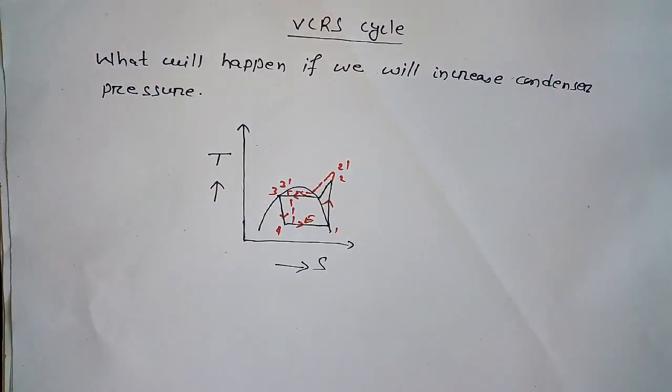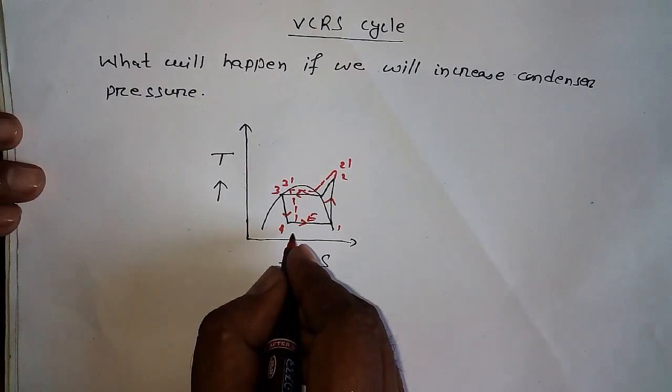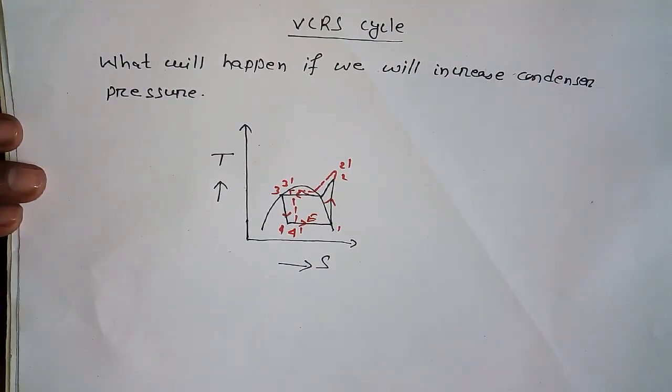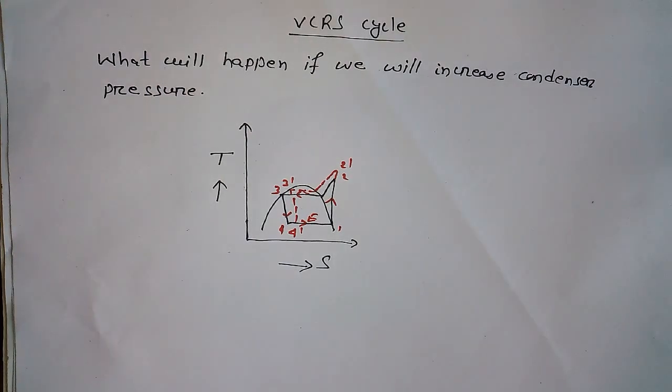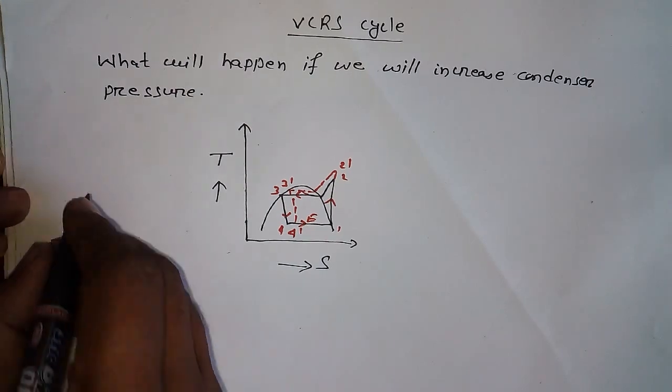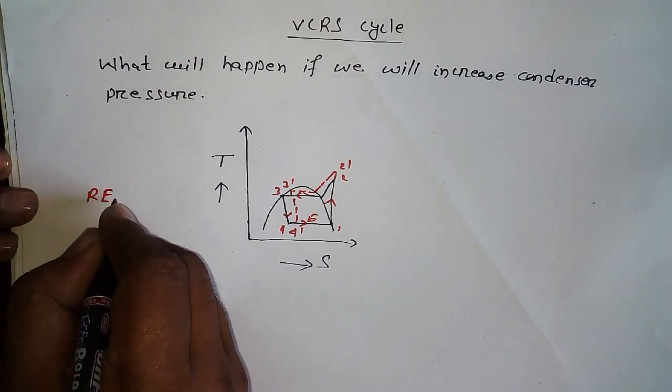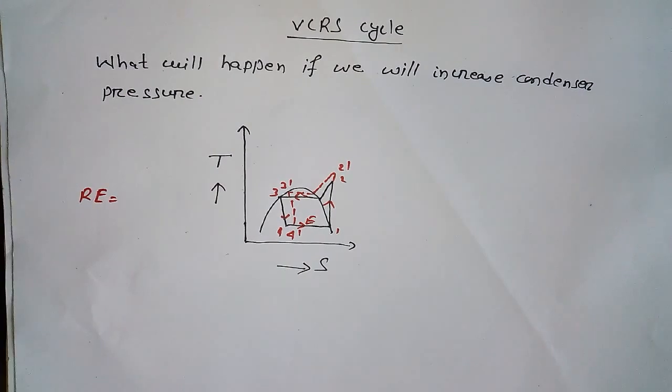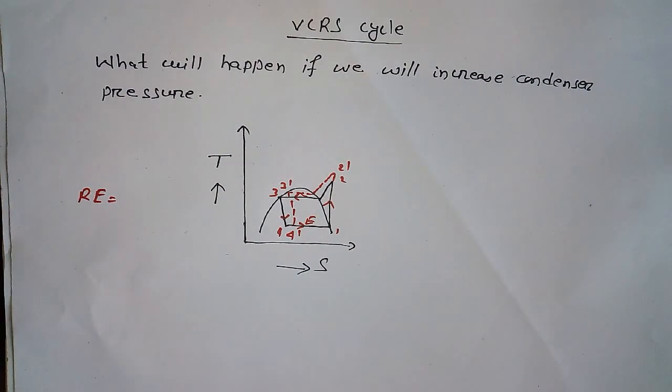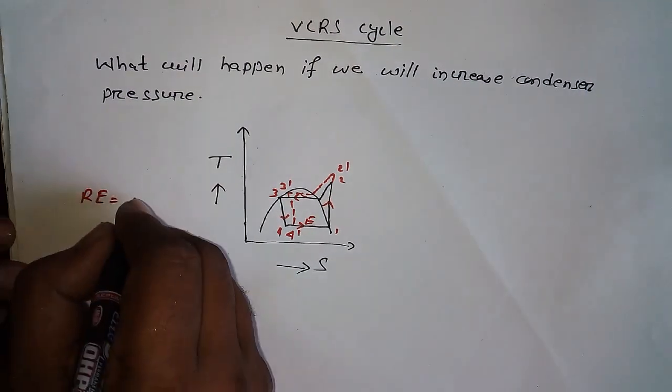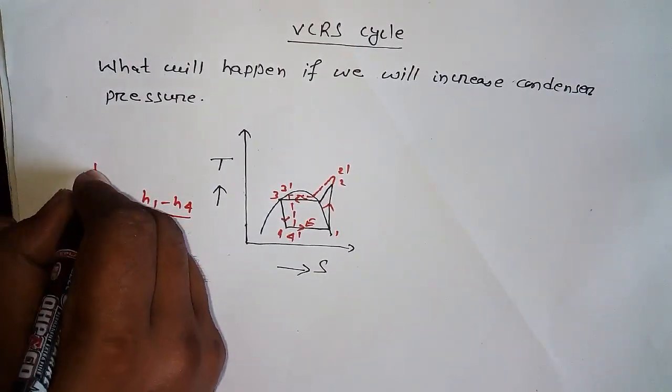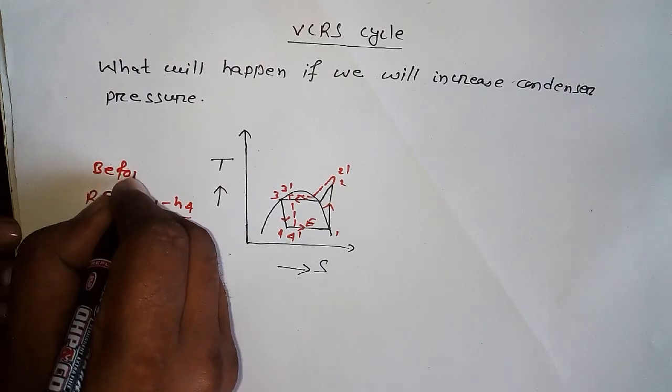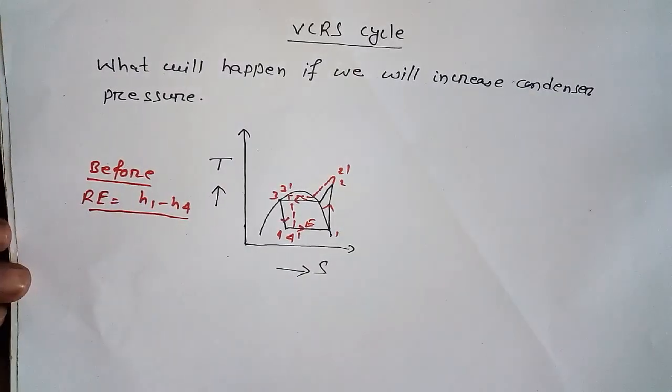This is 2 dash, this is 3 dash, this is 4 dash. Let's see the effect of increasing condenser pressure on refrigerant effect. Refrigerant effect is denoted by RE.